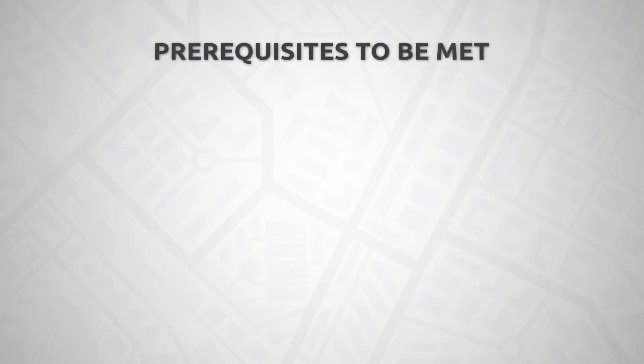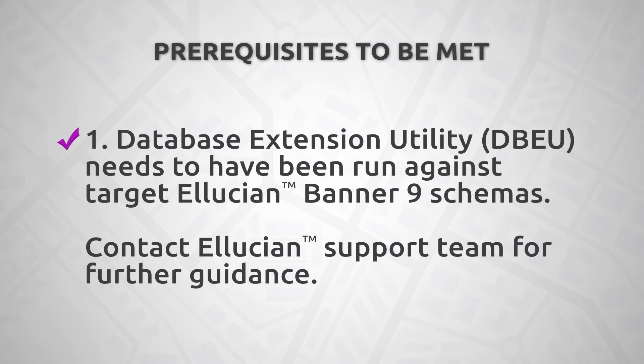As we begin the installation of Clean Address for Banner 9, there are several prerequisites that need to be met. First, the Clean Address Banner 9 page customizations presume that the Database Extension Utility, or DBEU, has been run against your target Ellucian Banner 9 schemas. DBEU is an Ellucian requirement and must run prior to installing any Ellucian Banner application that uses Banner 9 technology. Please ensure that DBEU has been run against your target schemas prior to installing the Clean Address Banner 9 page customizations.